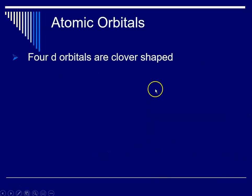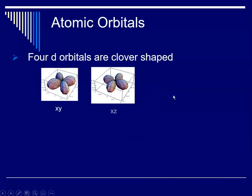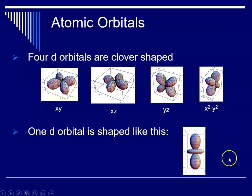And then four D orbitals are clover shaped, like this. The XY, the XZ, the YZ, and the X squared minus Y squared. And again, these are all mathematical representations. And then the fifth D orbital is shaped like a dumbbell with a donut. And that is the Z squared orbital.